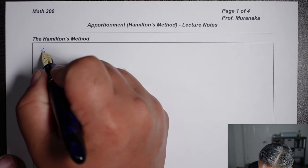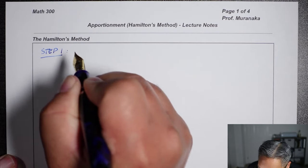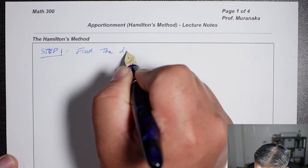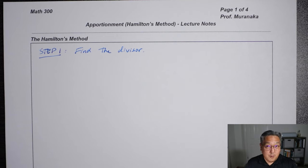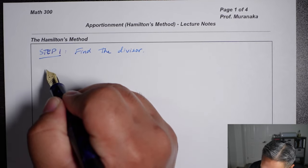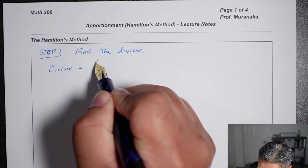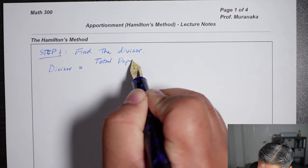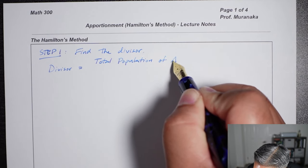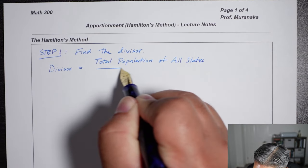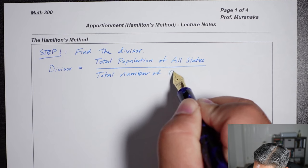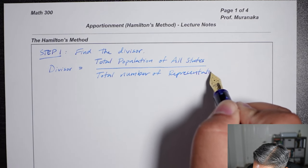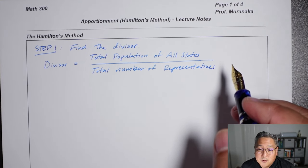So step one: we will find what we call the divisor. The divisor is the terminology used in our textbook — other textbooks sometimes call it the standard divisor. Basically, it's a number that we will be dividing into other things, but we need to find this number first. The divisor will be the total population of all states divided by the total number of representatives available. This gives us a single number, and I recommend going out to about three decimal places.